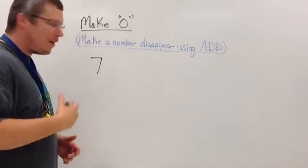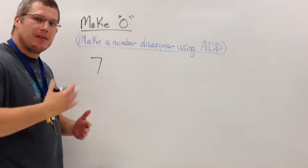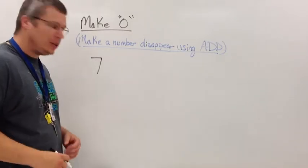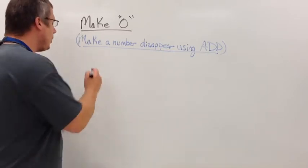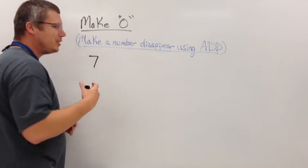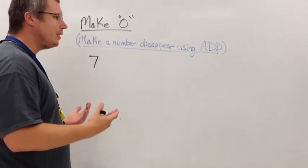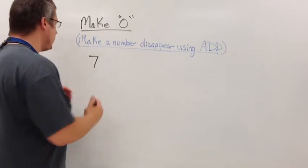Here's the number seven. If I want to make this number disappear, vanish, be worth absolutely nothing, one option could be just erase it. Well, I want to do more than that. I don't want to just have to erase it because technically it's not legal. What we're going to have to do is use addition.